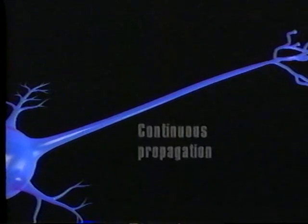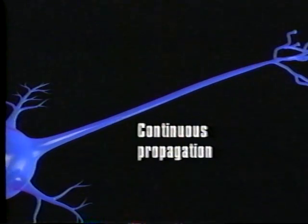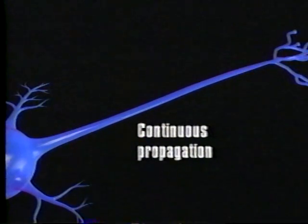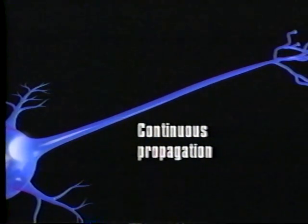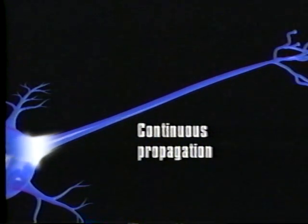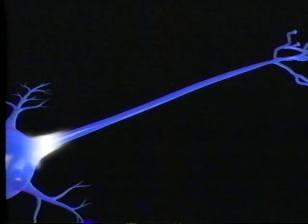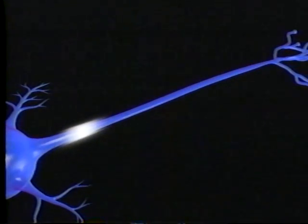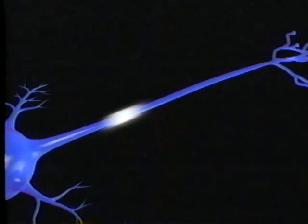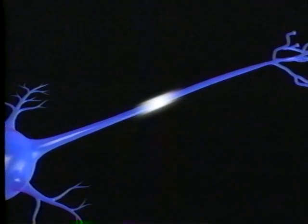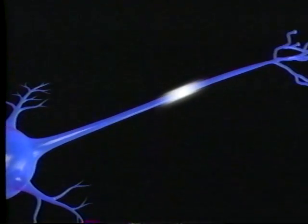This is called continuous propagation. But action potentials don't travel at the same speed along all axons. During continuous propagation, a localized action potential spreads across the entire excitable membrane surface in a series of small steps.